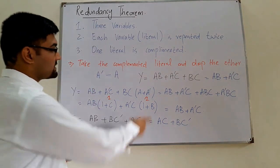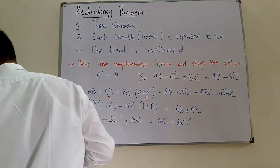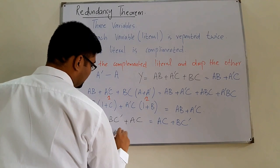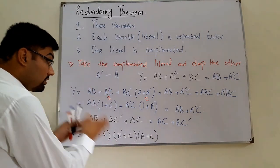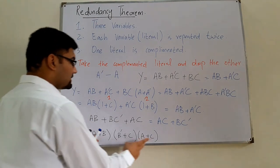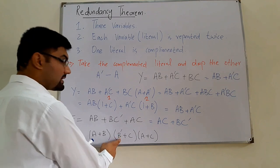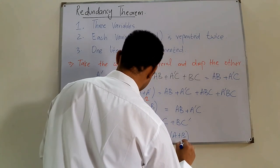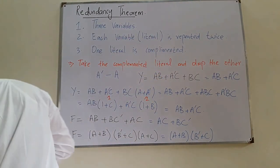Another example: F = (A + B)(B' + C)(A + C). Simplifying this directly would take a lot of time, but the Redundancy Theorem makes it very short. B is complemented, each variable appears twice, and there are three variables. So we take the terms containing B and B', and drop the other: F = (A + B)(B' + C).